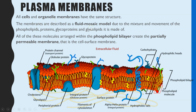Membranes are often described as a fluid mosaic model, and this is due to the mixture of different components — that is the mosaic part. The fluid part refers to the movement of those molecules; they are not fixed or rigid, they can actually slightly move up and down and side to side. The different components that make this mosaic are the phospholipids, proteins, glycoproteins, glycolipids, and cholesterol. All of those molecules are embedded either on the outside or through the phospholipid bilayer.